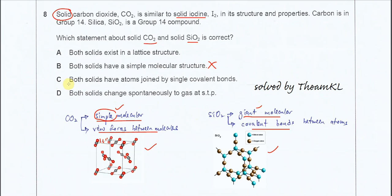Okay, C: both solids have atoms joined by single covalent bonds. No. SiO2 it has the covalent bonds but CO2 it has two types. Okay so this one's wrong.